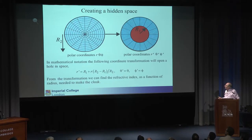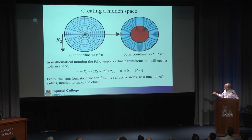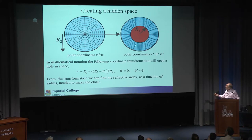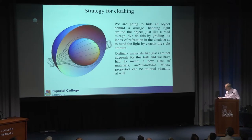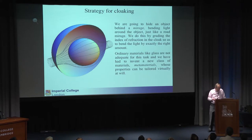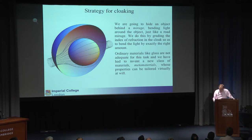If you want to get mathematical, you can make a transformation and say: here is the region we're going to build our cloak. We create the hidden space by doing a radial compression — here's the formula — and push all of space, taking with it all the field lines of the light, into this region. Knowing this coordinate transformation, you can say what the refractive index in this region must be. When I went to Malvern consulting and showed this paper on cloaking, they didn't believe it. So they got their big computers out — and yes, it did work.